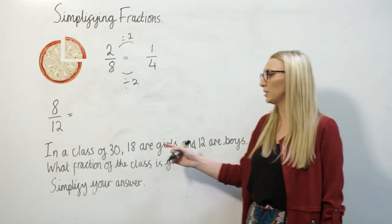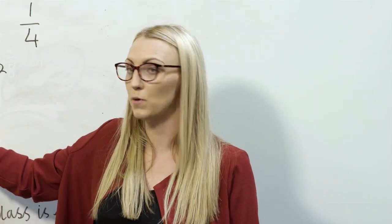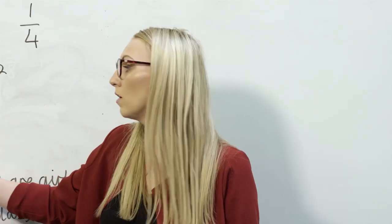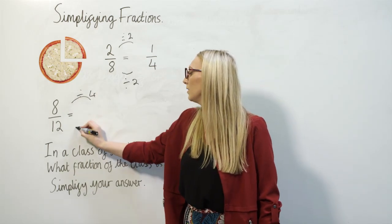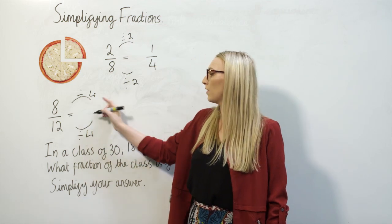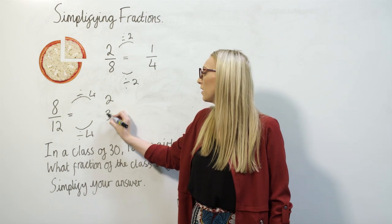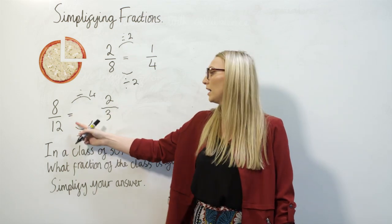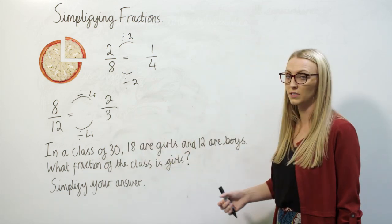In this example, 8 twelfths, I'm going to go through the steps again. I'm going to find the highest common factor of both 8 and 12, which is 4, and I'm going to divide the numerator and the denominator by 4. 8 divided by 4 is 2, and 12 divided by 4 is 3. So here I can see that 8 twelfths is equivalent to 2 thirds, and that's the answer in its simplest form.